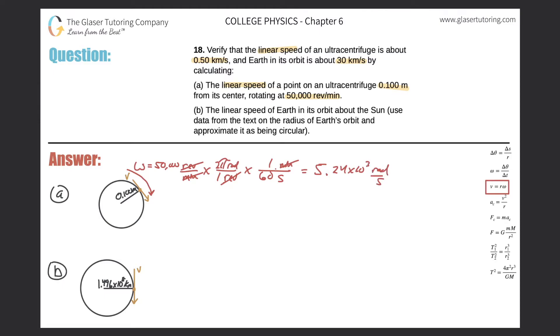Alright, that is great because now this means I can calculate. So let's write for letter A here. We're going to write our formula: V is equal to R omega. So the radius was 0.100. The angular velocity here was 5.24 times 10 to the 3rd. And now you just need to throw it into the calculator.